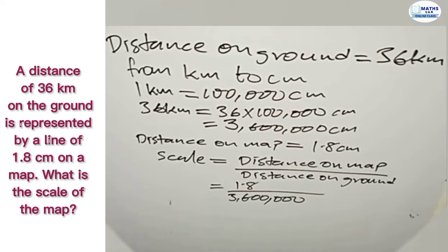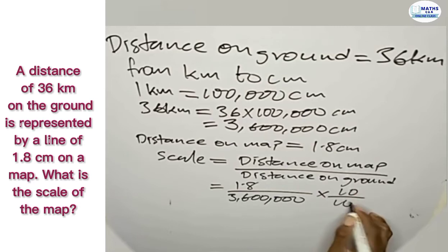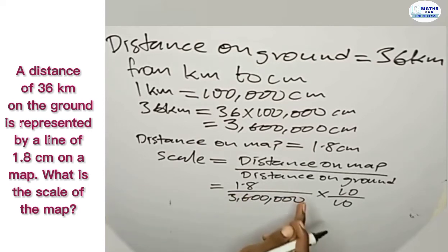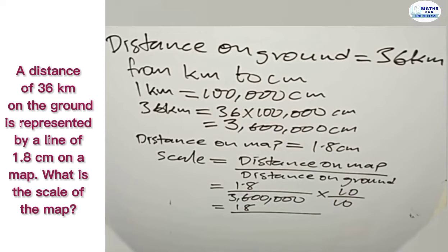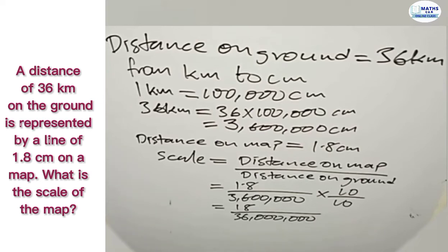To make the cancellation simpler, we multiply and divide by 10 to remove the decimal from 1.8. So 10 × 1.8 gives us 18, and 3,600,000 multiplied by 10 gives us 36,000,000. Now we simplify: 18 divided by 36,000,000 — since 18 divides into 36 two times — gives us 1 over 2,000,000.